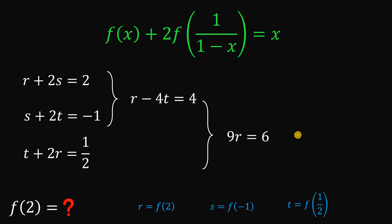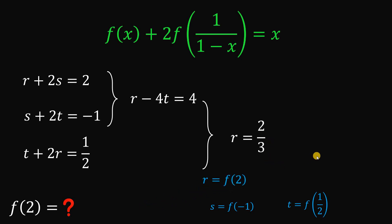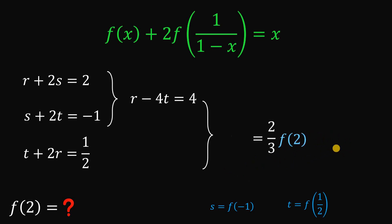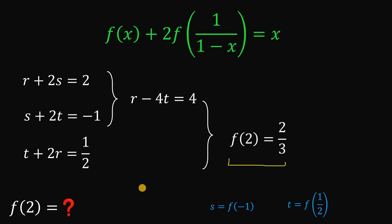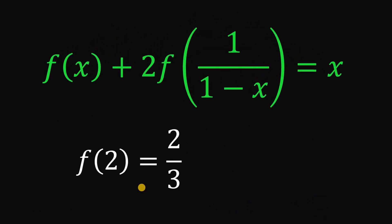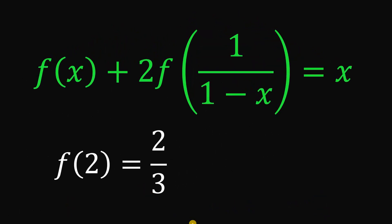Solving for the value of r, divide both sides by 9. We get 6 over 9, which simplifies to 2 over 3. And take note, this r is simply equal to f of 2. Therefore, f of 2 is equal to 2 over 3, and we are done. So f of 2 in this question is 2 over 3.